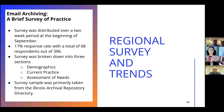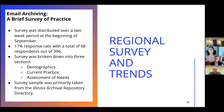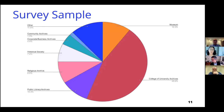Our survey, 'Email Archiving: A Brief Survey of Practice,' was distributed regionally to archives, museums, and libraries in Illinois at the beginning of September. We opted to start with a survey targeting institutions in Illinois to assess any areas needing refinement before opening the survey to a larger sample. We had a total of 68 responses out of 396 across two weeks. The survey had seven questions broken down into three sections: demographics, current practice, and assessment of needs. The 68 responses varied from museums, college and university archives, to corporate and business archives, with a little less than half primarily consisting of college and university archives.